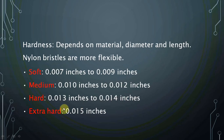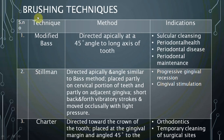Commonly we use medium bristles; for sensitive teeth we suggest soft toothbrushes. A very common method we recommend to patients is the Modified Bass technique — the brush is angled 45 degrees apically to the long axis of the tooth, which helps with circular cleaning. The Stillman method is directed apically and is similar to the Bass method, but the brush is placed partly on the cervical portion of the teeth and partly on the adjacent gingiva.